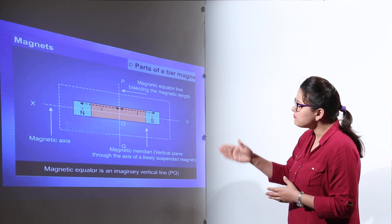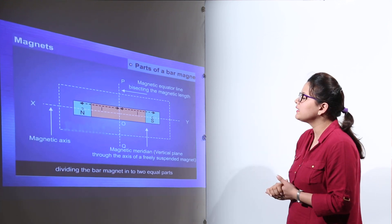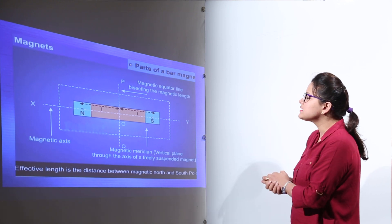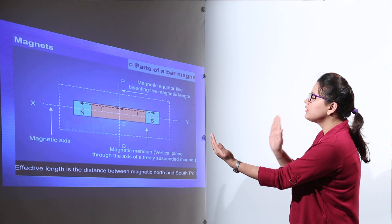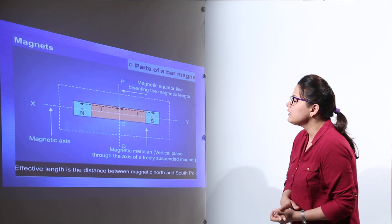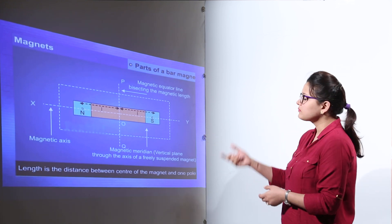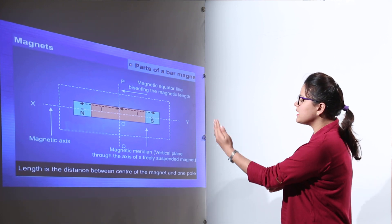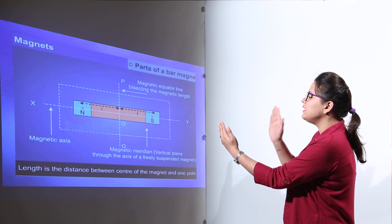You can see the line PQ, which is the magnetic equator, dividing the magnet into two equal parts. Effective length is the distance between the magnetic north and magnetic south. And the last, that is the length. The length of the magnet is the distance between the center of the magnet and any one pole.